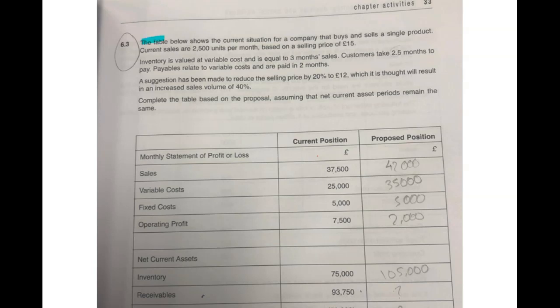The table below shows the current situation for a company that buys and sells a single product. Current sales are 2,500 units per month based on a selling price of £15. Inventory is valued at variable cost and is equal to three months sales. Customers take two and a half months to pay, so that is your trade receivables.